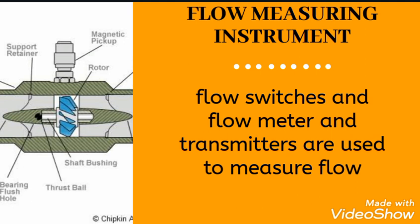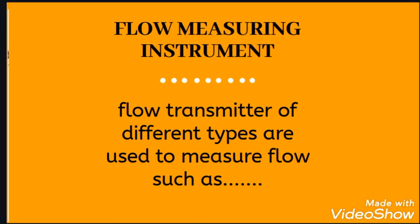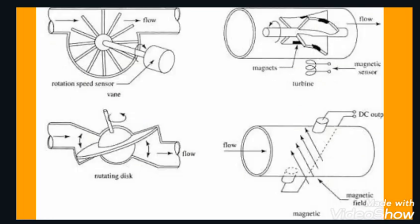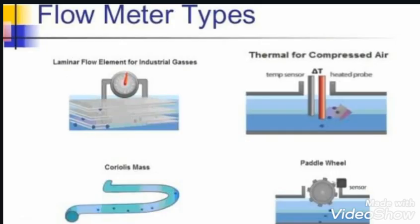Flow measuring instruments. We can measure with the flow switch, with the flow meter, and we can use a transmitter to transmit a standard signal. Flow transmitters of different types are used to measure flow. There are so many types of flow measuring instruments, including flow sensors like pitot tube, restricted orifice, temperature loss measuring system, vortex shedding, vane and turbine, magnetic flow meter, rotating disc, laminar flow element, thermal system, paddle wheel, and Coriolis mass flow meter.